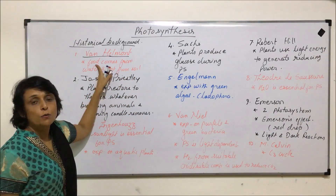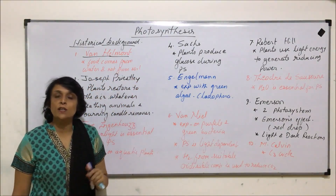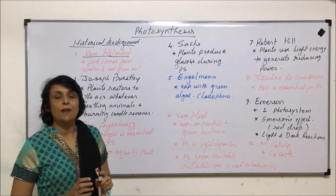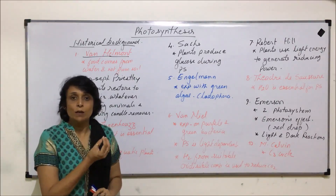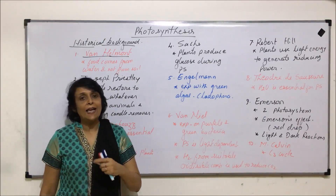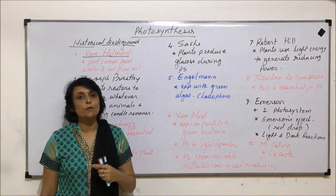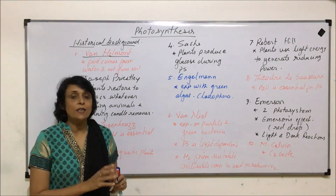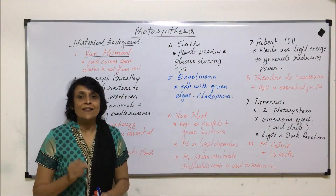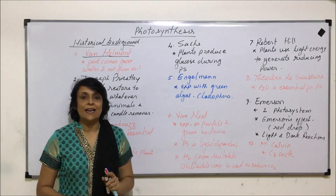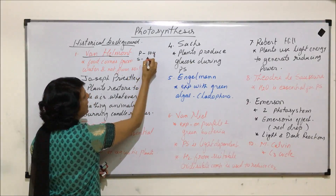What Helmont said was that food which is synthesized by plants comes from water and not from soil. This statement was based on a simple experiment. He took a potted plant and weighed the plant separately and the soil in that pot separately — so there was X mass of the plant and Y mass of the soil. He grew that plant in that pot, just watering it without adding anything else. After a few years he measured the mass of the plant and it was found to be many folds more than the initial weight, while there was negligible loss in the weight of the soil.